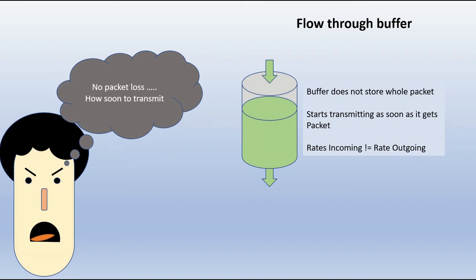Network Bob has this flow-through buffer design in which the buffer does not store the whole packet. It starts transmitting as soon as it gets the packet, and the incoming and outgoing rates are not matched.